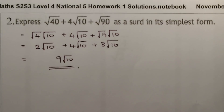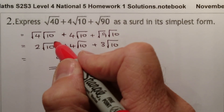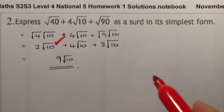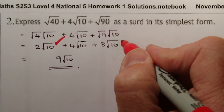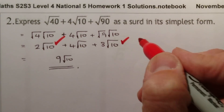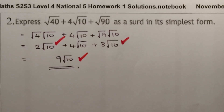Marking for this question: 1 mark for simplifying root 40 to 2 root 10, 1 mark for simplifying root 90 to 3 root 10, and 1 mark for gathering them together to get the final answer. That's 3 marks total.